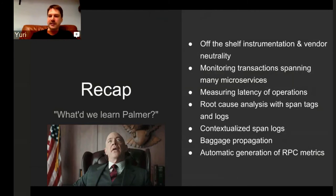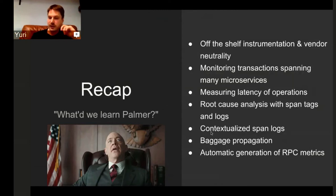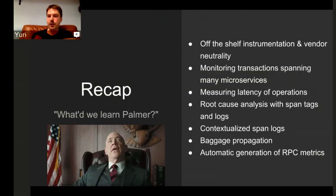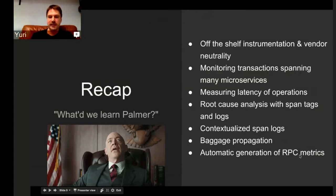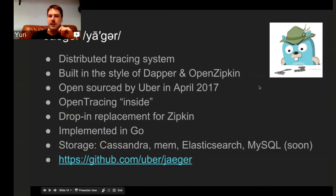Tracing allows measuring latency operations, finding critical paths, analyzing root causes of errors or delays. We can get very highly contextualized logging with tracing. Baggage propagation is a very powerful technique — at Uber, there are projects built strictly on top of baggage propagation that rely on Jaeger instrumentation because they need baggage propagation. Jaeger is a distributed tracing system, open-sourced in April this year, built with OpenTracing from the beginning. It can be used as a drop-in replacement for Zipkin, the backend is all in Go, and it supports several backend storages.